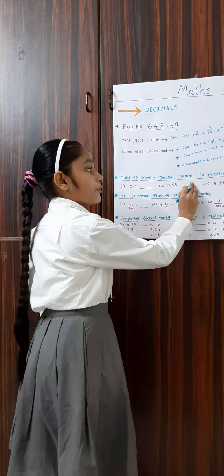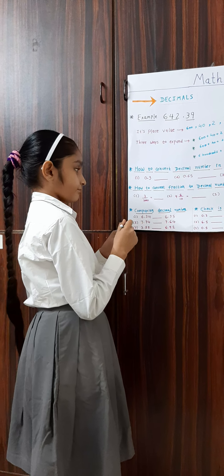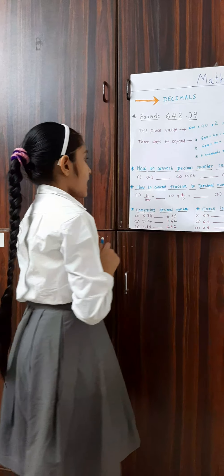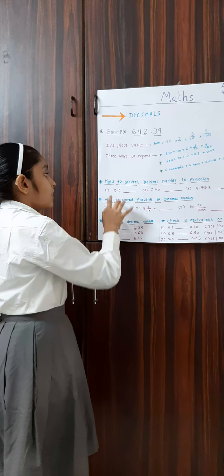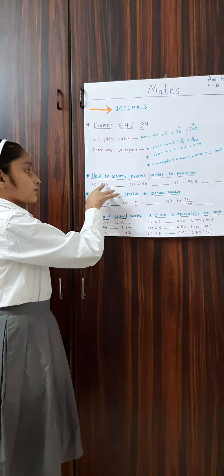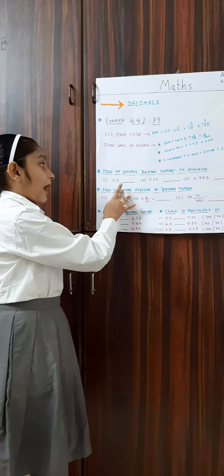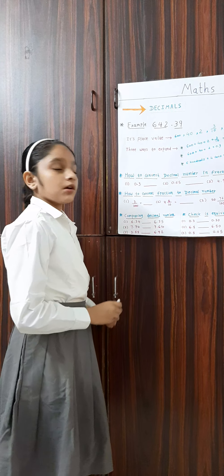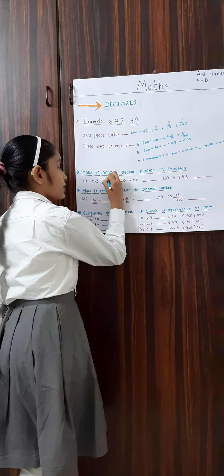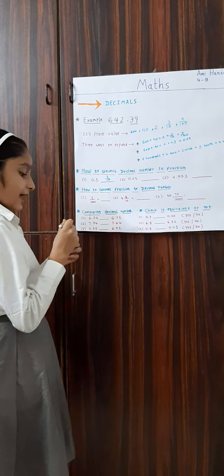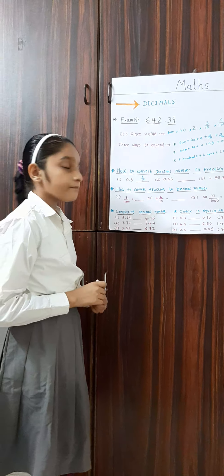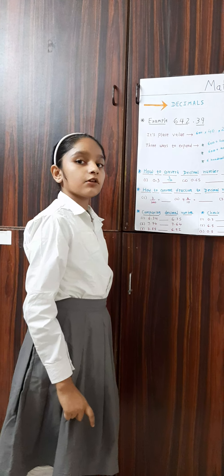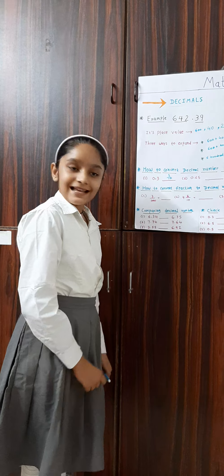Now, how to convert a decimal number to a fraction? For example, 0.3 — after the decimal point there is only one digit, so it becomes 3 upon 10, because 10 has only one zero and there is only one digit after the decimal point.